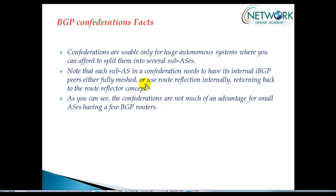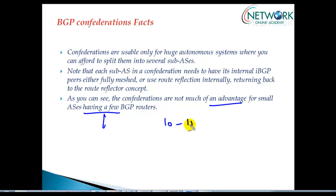Confederations are not a much of an advantage generally if you have a small autonomous system number with just a few routers — let's say hardly 10 to 15 routers inside. It is really not recommended to get into confederations configuration for that. But if you have a very large autonomous system number, you get a much better advantage from confederations.